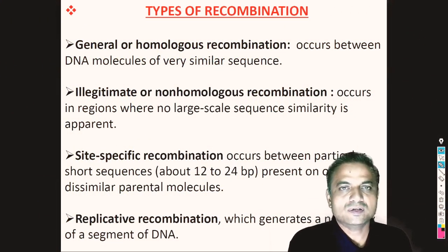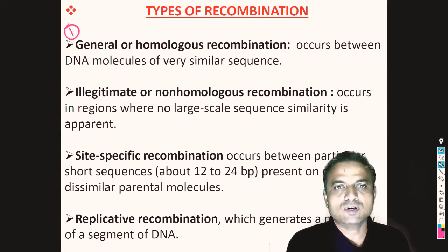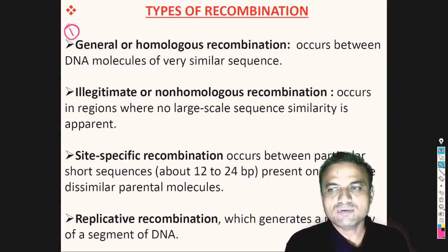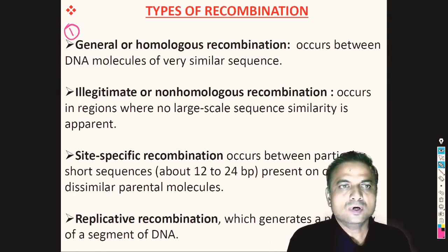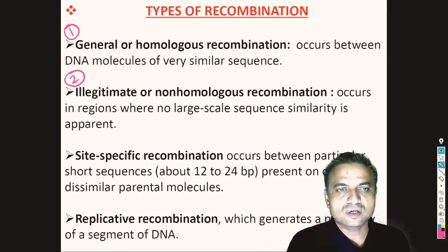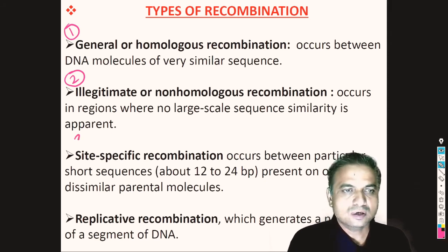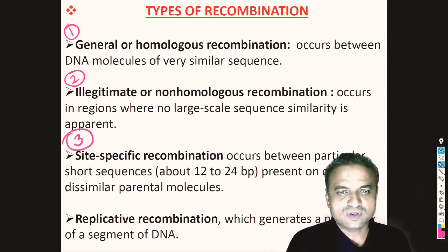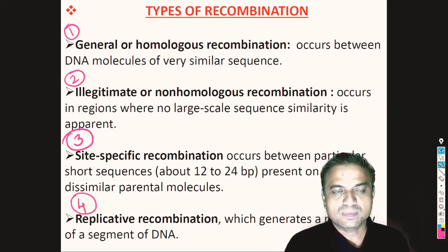We have already studied what recombination is. Today we will see the types of recombination, and I am going to emphasize on general or homologous recombination. Apart from homologous recombination, there are various types: illegitimate or non-homologous recombination, site-specific recombination, and replicative recombination.